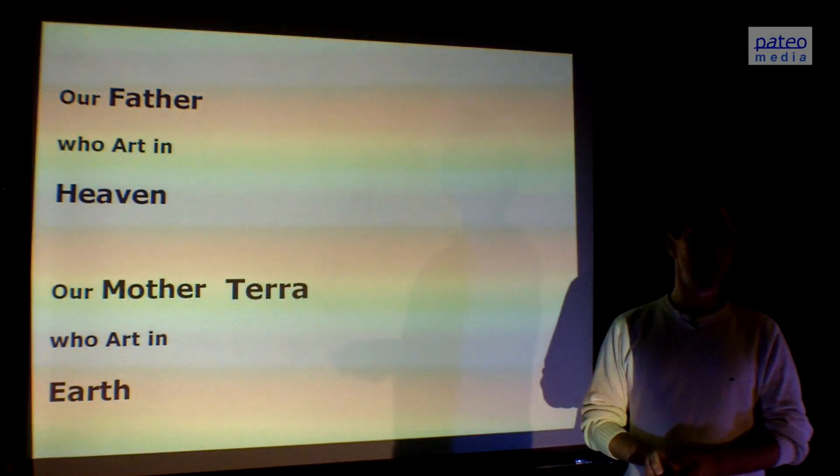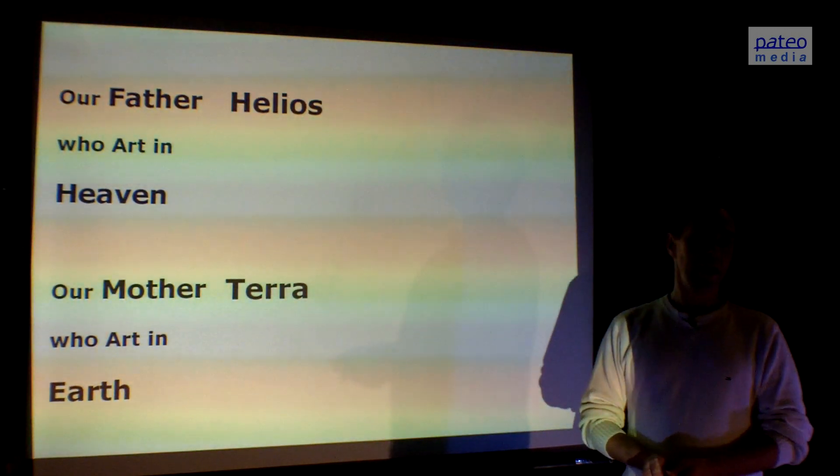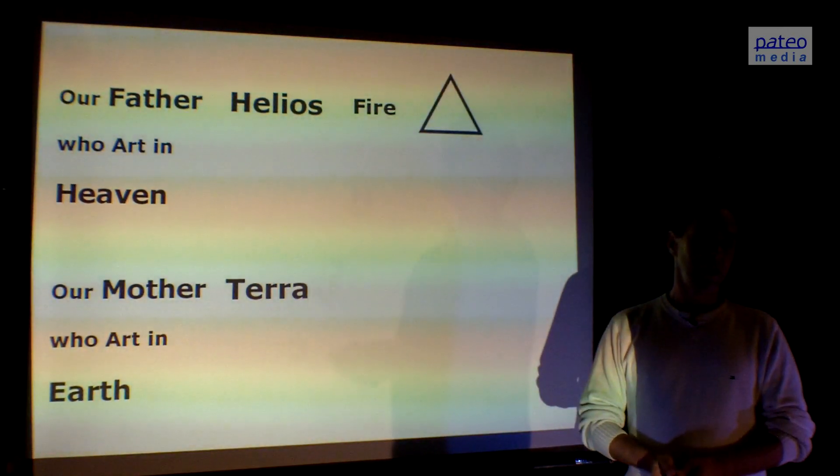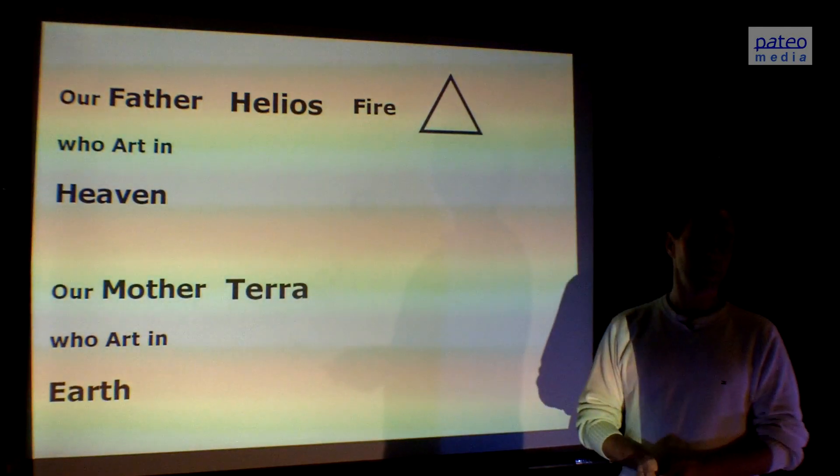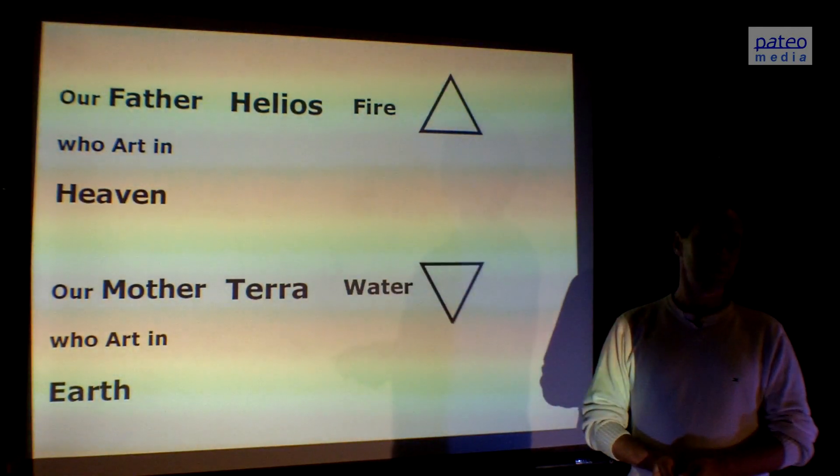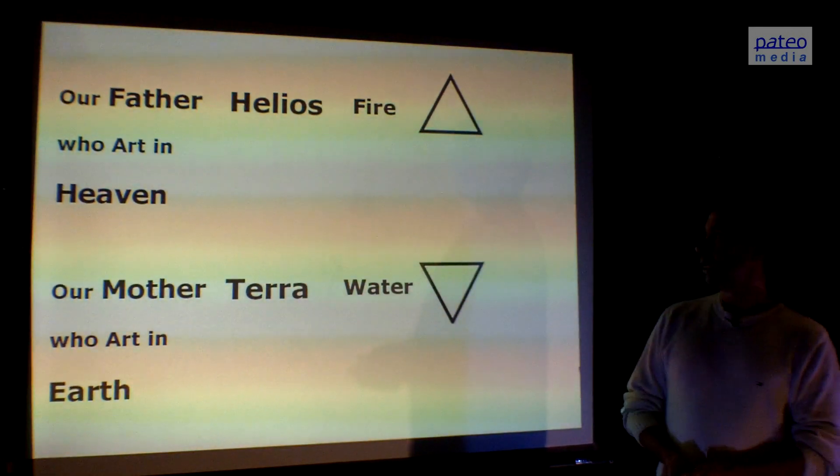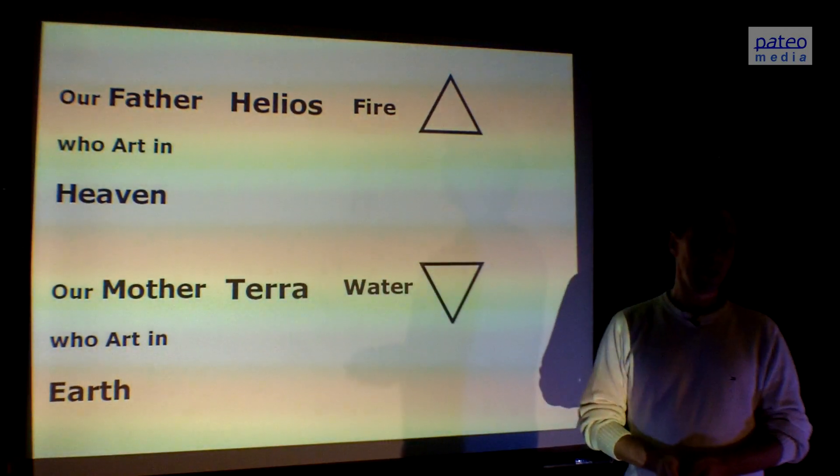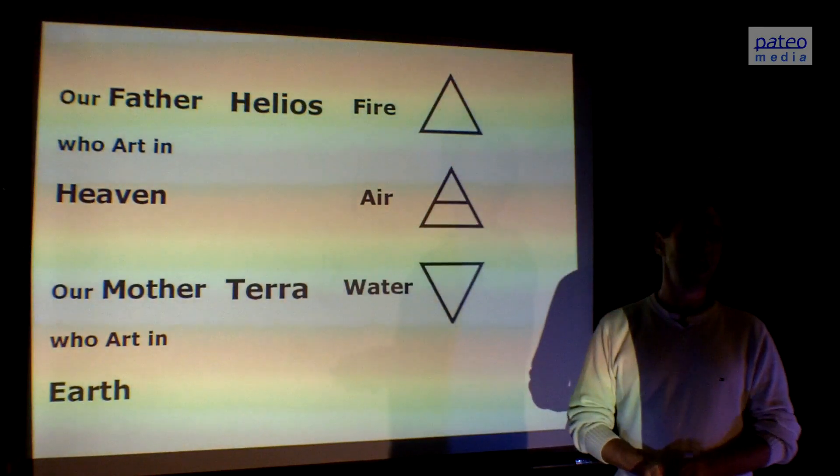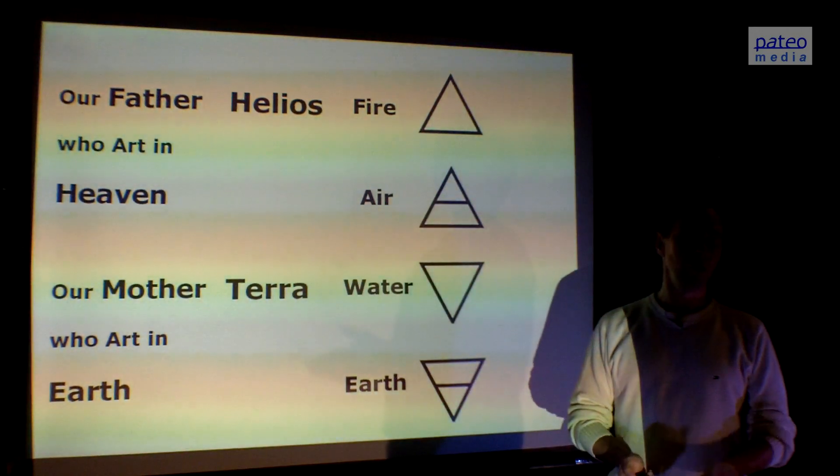Our Father is not God, our Father is Helios, the sun around which Terra orbits. Our Father is ejecting plasma, you can say fire. It's a fire sun, and Terra is a water planet. About 70% of the surface is covered with water. So this stands for water and our Father stands for fire. Our Father is in heaven. Heaven means air. It's around us. And of course Terra means earth.